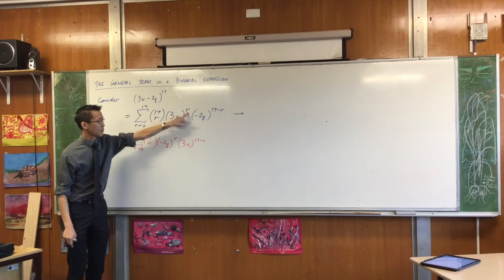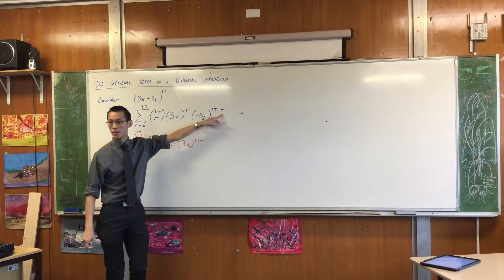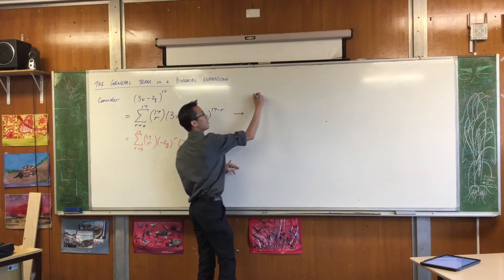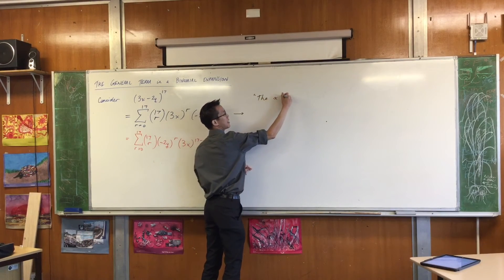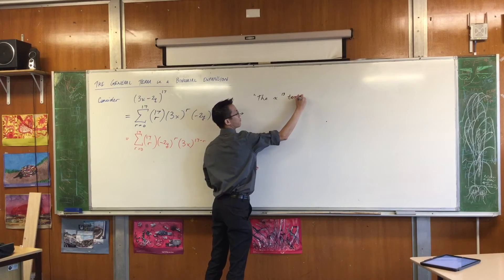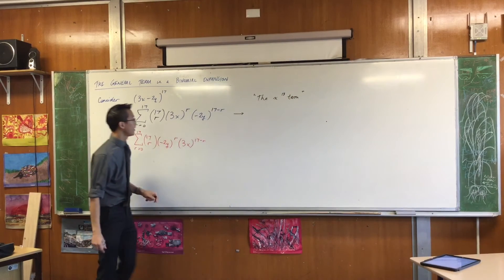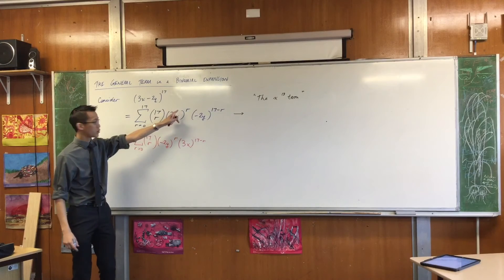So therefore, I want r equals 13, this r will be 13, and this r will be 13, right? So if I want the x to the 13th term, that guy, right? I'm just going to go straight to r equals 13 like so.